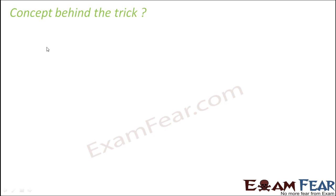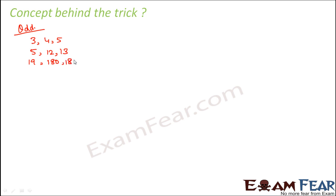So let us first talk about the odd triplets — that is, odd numbers. In fact, we already found out the members of some of the odd triplets. Let's take some examples: 3, 4, 5; 5, 12, 13; and 19, 180, 181. These are some examples of Pythagorean triplets where the smallest member is an odd number. We will do the odd ones first.